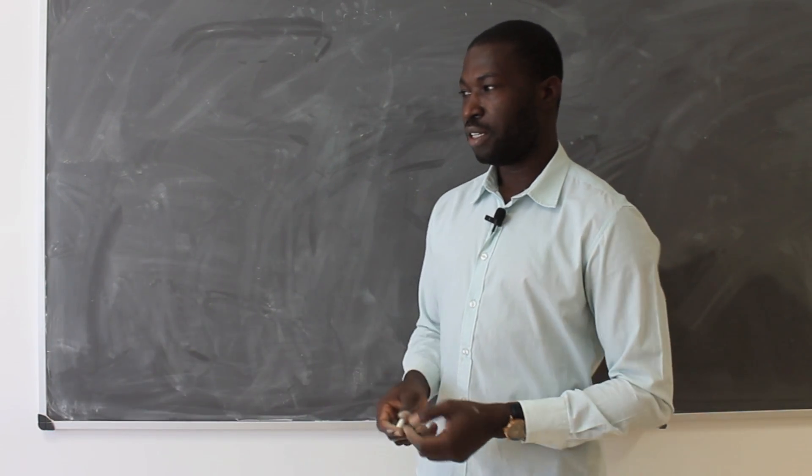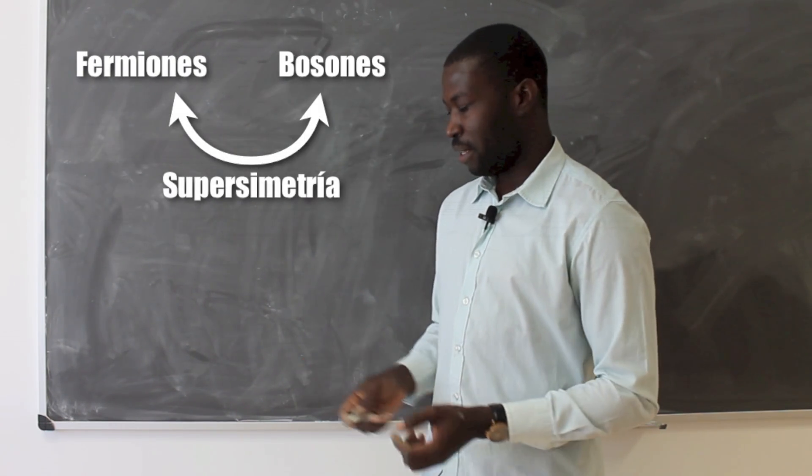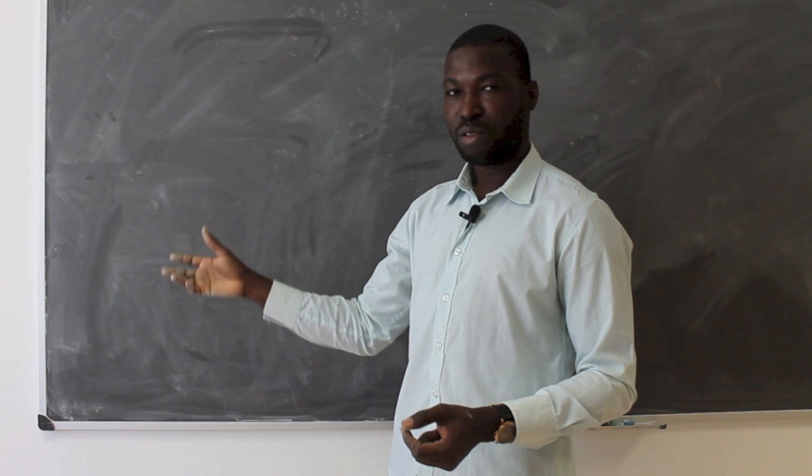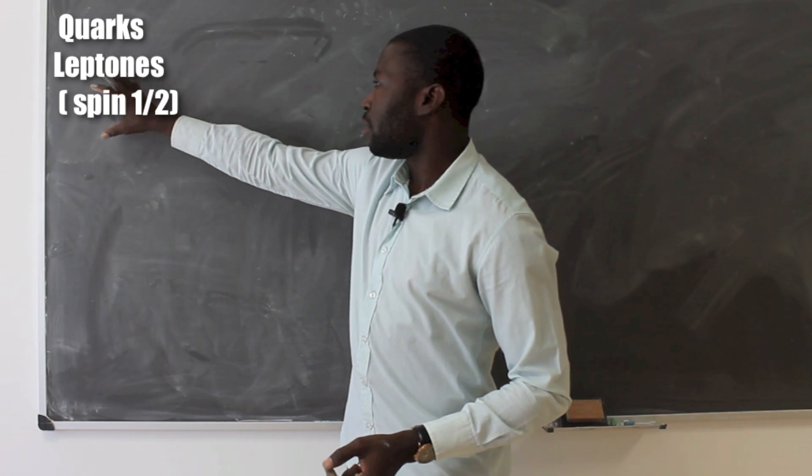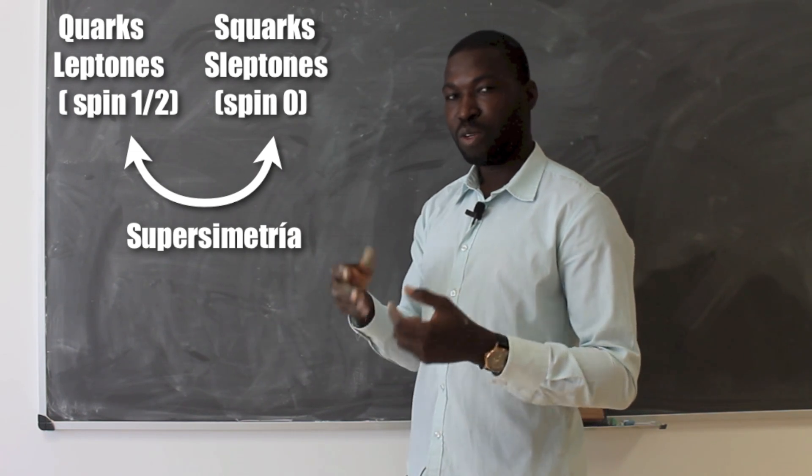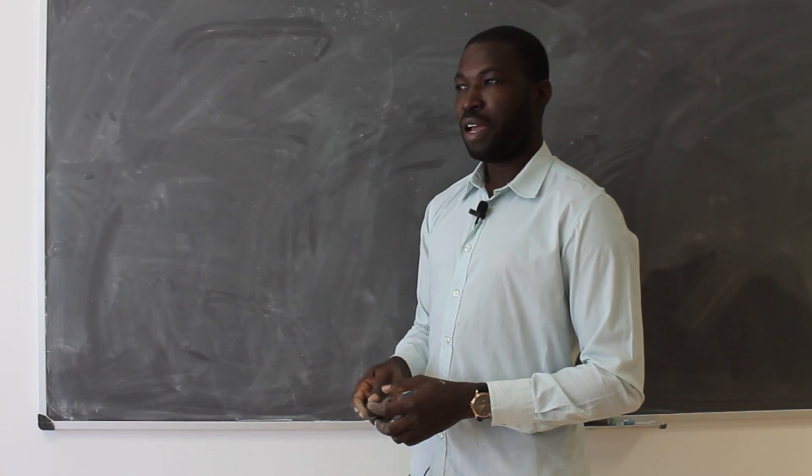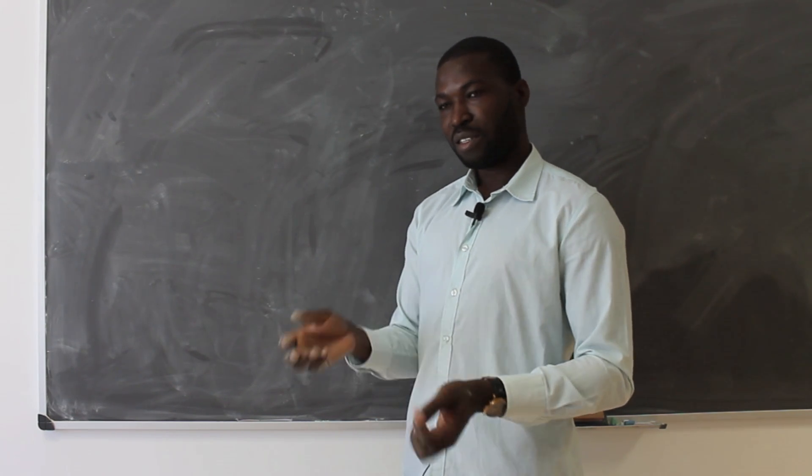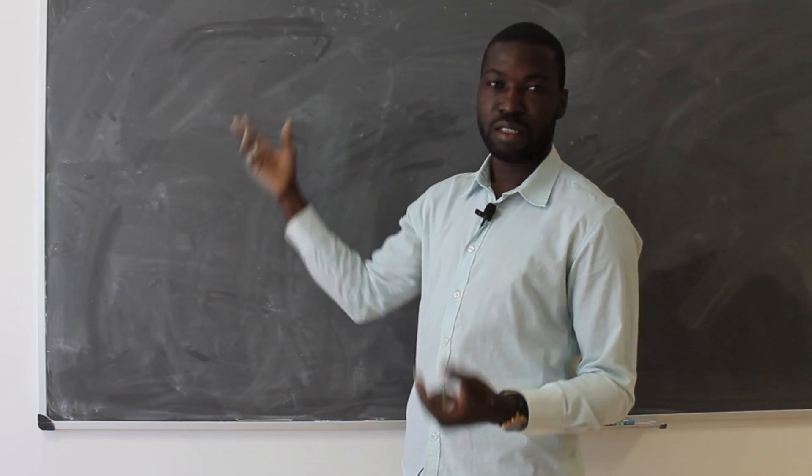Supersymmetry as I was saying is a principle which treats forces and matter on equal footing. In the sense that if you take the standard model the quarks and leptons which are fermions meaning that they have spin half, half integer, the supersymmetry predicts that they should have cousins which we don't see yet which should have integer spin and in the limit that the principle is an exact symmetry the masses of such particles will be equal to the fermions of the standard model.